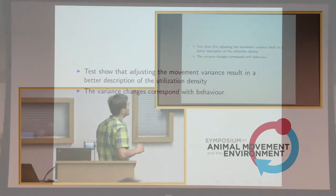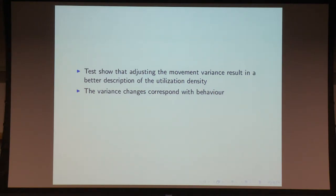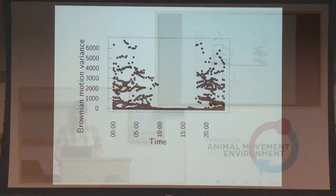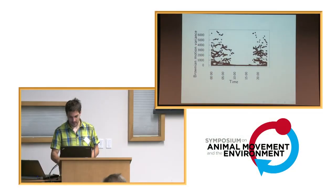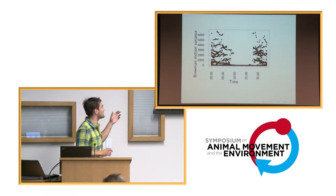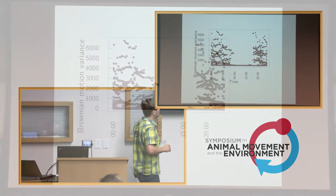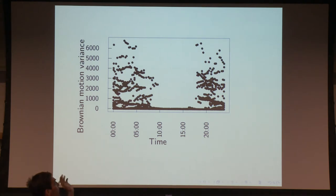We showed this approach improves the utilization density, giving a better description of where the animal is — validated by leaving locations out. The variance also corresponds to behavior: for a fisher, for example, the variance during the day is much lower than at night when the animal is moving around and active.